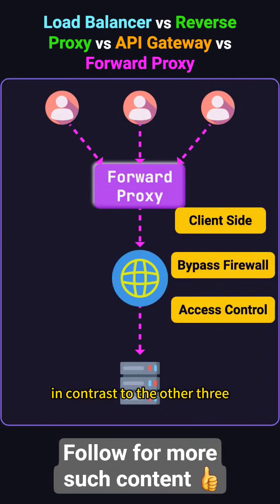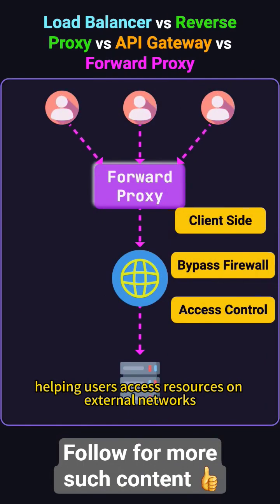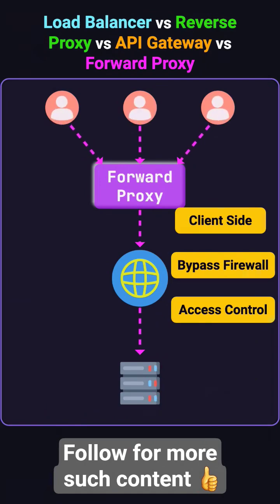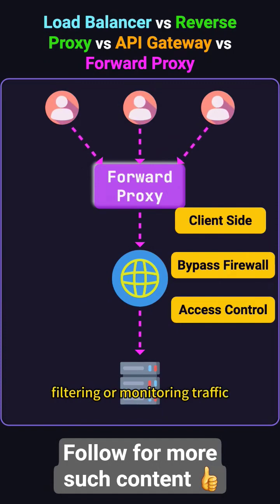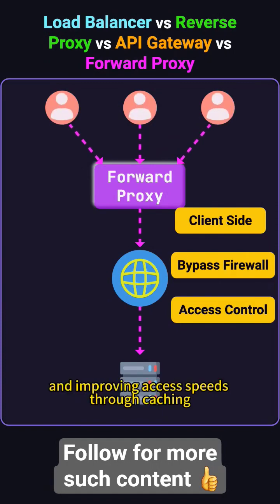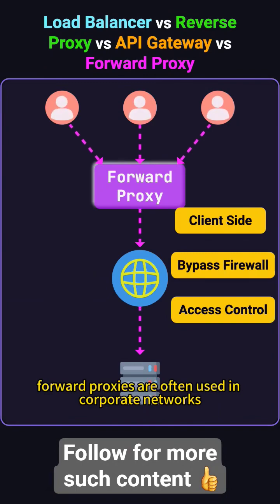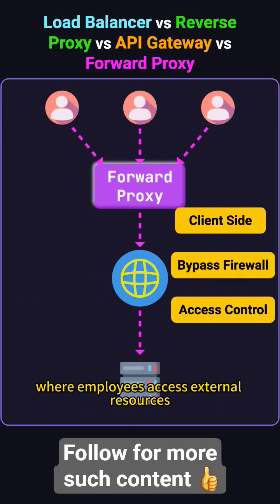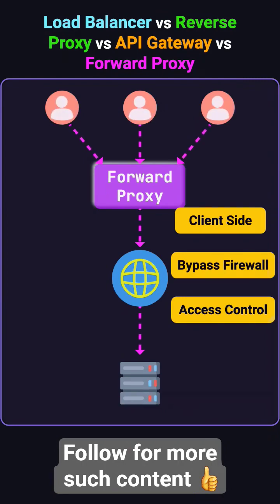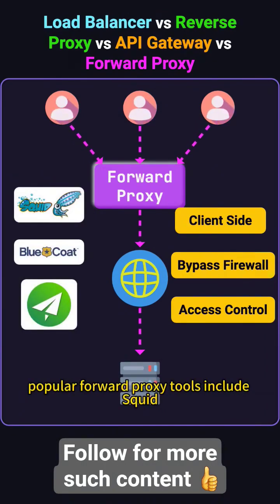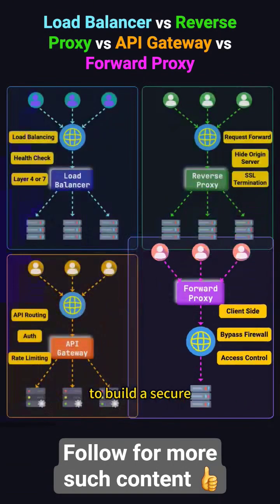In contrast to the other three, a forward proxy sits on the client side, helping users access resources on external networks. Common uses include bypassing network restrictions, hiding the client's identity, filtering or monitoring traffic, and improving access speeds through caching. Forward proxies are often used in corporate networks, where employees access external resources, or by individuals looking to access blocked websites. Popular forward proxy tools include Squid, Bluecoat Proxy SG, and Shadowsocks.